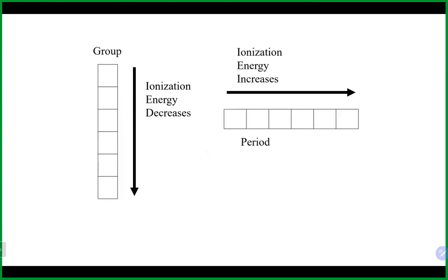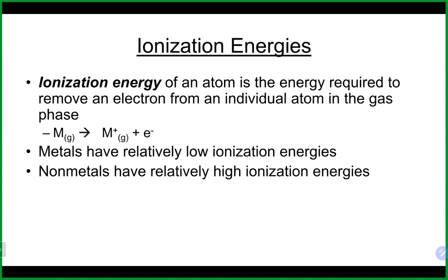Let's look at some of these trends. The first trend is ionization energy — the energy required to remove an electron from an atom in a gas phase. Metals have really low ionization energy, which means it doesn't take a lot of effort to get them to give up an electron. That is why metals typically lose electrons and become cations. Non-metals have very high ionization energy — it takes a lot of energy to remove an electron from a non-metal, so they typically will not lose electrons; they'll gain electrons and become anions.